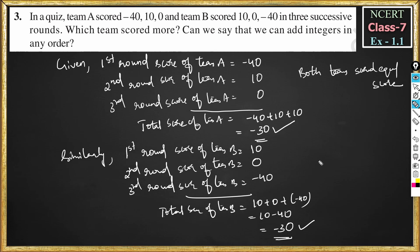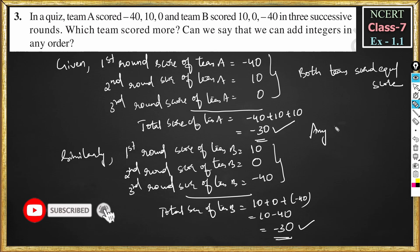For the second question — can we say that we can add integers in any order? Team A's scores are minus 40, 10, and 0, whereas team B's scores are 10, 0, and minus 40. All three scores are the same type, but in three different rounds. By adding all these, we get the same score for both team A and team B. So, we can say that we can add integers in any order. Statement 2 is true.